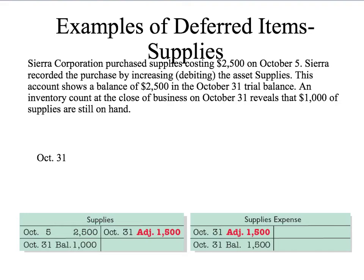Another deferred item is supplies. Suppose we purchase supplies costing $2,500 on October 5th, and we put them in the cupboard. We debit the asset supplies and credit cash or accounts payable. This account at the end of October 31st still shows a debit balance of $2,500.